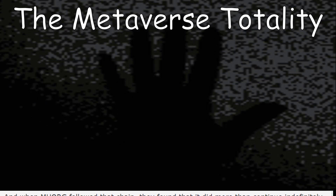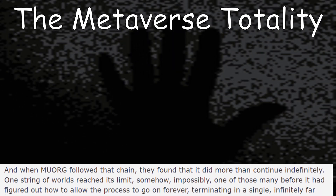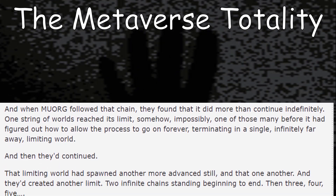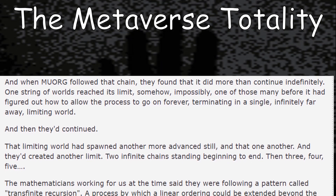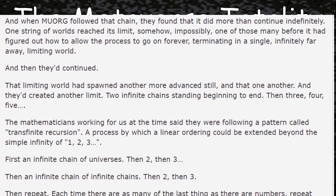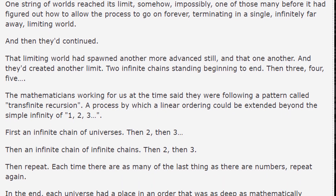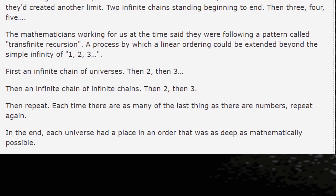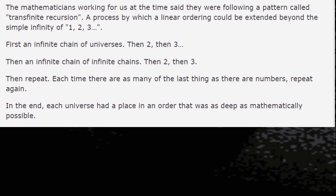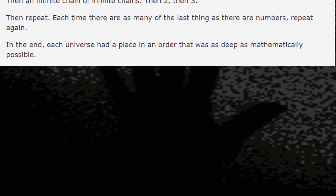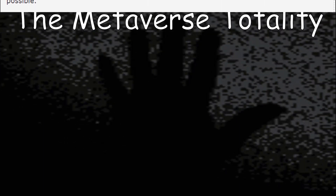This is explained by the oracle: "When MUORG followed that chain, they found that it did more than continue indefinitely. One string of worlds reached its limit. Somehow, impossibly, one of those many before it had figured out how to allow the process to go on forever, terminating in a single, infinitely far away, limiting world. And then they'd continued. That limiting world had spawned another more advanced still, and that one another. And they'd created another limit. Two infinite chains standing beginning to end. Then three, four, five. The mathematicians working for us at the time said they were following a pattern called transfinite recursion — a process by which a linear ordering could be extended beyond the simple infinity of one, two, three. First an infinite chain of universes, then two, then three, then an infinite chain of infinite chains, then two, then three, then repeat. Each time there are as many of the last thing as there are numbers, repeat again. In the end, each universe had a place in an order that was as deep as mathematically possible."